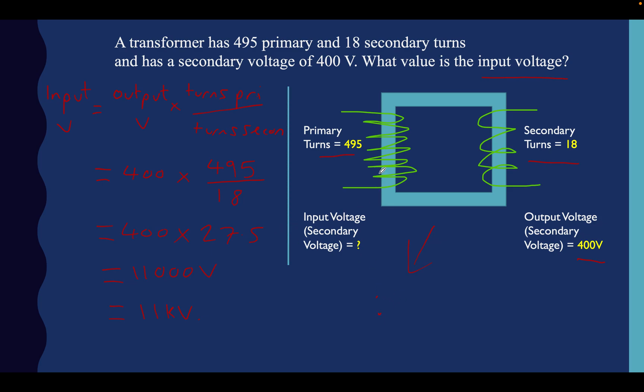We've already calculated that really, by doing 495 divided by 18. We know that the ratio is this number here. That's why I said we'll talk about it in a minute. So the ratio is going to be 27.5 to 1. Because if we do 27.5 multiplied by 400, we're going to get 11,000, which is stepping that voltage up like that. It's a step down transformer. And if you do 495 divided by 18, you get 27.5. So that's our ratio. The step down transformer ratio is 27.5 to 1, and we've calculated our input voltage over here.